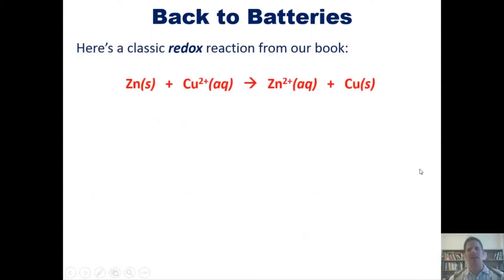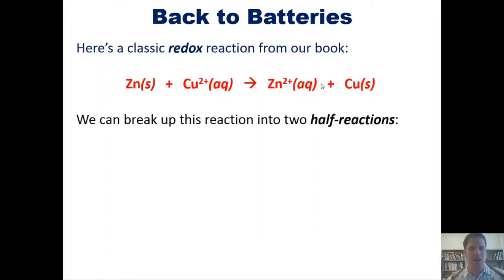So here is a classic redox reaction from our book. As you'll note, zinc goes from being zinc zero to zinc 2+. It's becoming more positive going from left to right, which means that it's losing electrons, which means that it is getting oxidized. In contrast, copper is going from copper 2+ to copper zero. It's becoming more negative, which means that it's receiving electrons, which means that it is getting reduced.